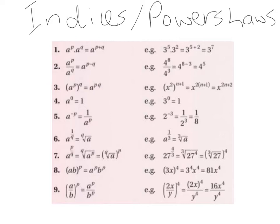The third law: when we are raising a power to a higher power, we multiply the powers. So A to the power of P raised to the power of Q gives us A to the power of P multiplied by Q. The P and Q are stuck together, and two things stuck together in maths means multiply. An example: x squared raised to the power of n plus 1 gives us x to the power of 2 multiplied by n plus 1. 2 times n gives us 2n and 2 times 1 gives us 2, so we end up with x to the power of 2n plus 2.